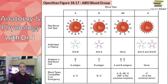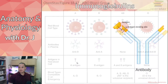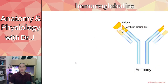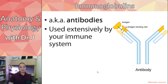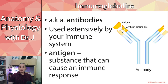Antigens are related to things we call antibodies, which we briefly covered earlier in the semester. Now we need to talk more about these proteins called immunoglobulins, or antibodies. The term 'immunoglobulins' comes from the fact that they are globulins used by your immune system.